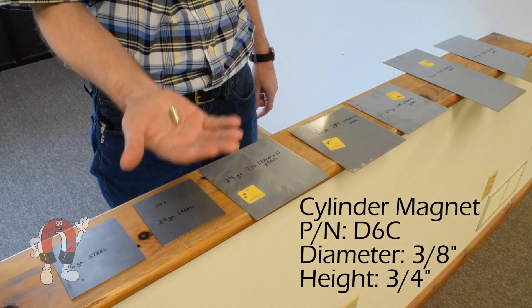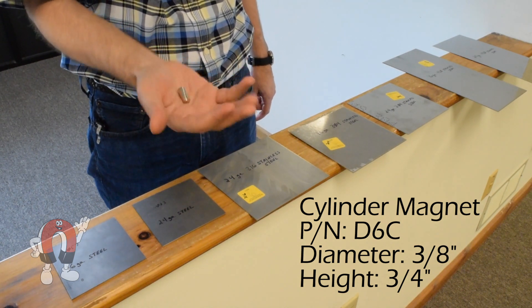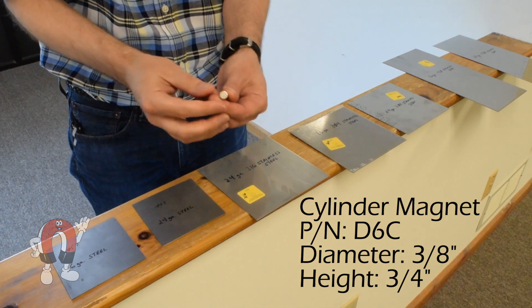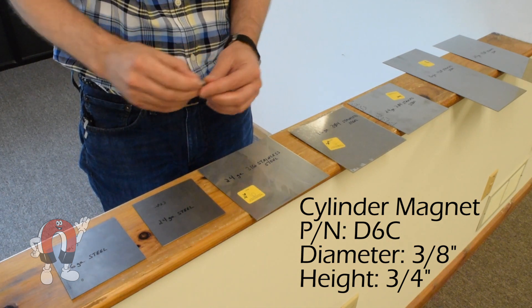This is a neodymium magnet. It's a D6C, 3⅛ inch diameter, 3¼ inch long. It's a strong little magnet.